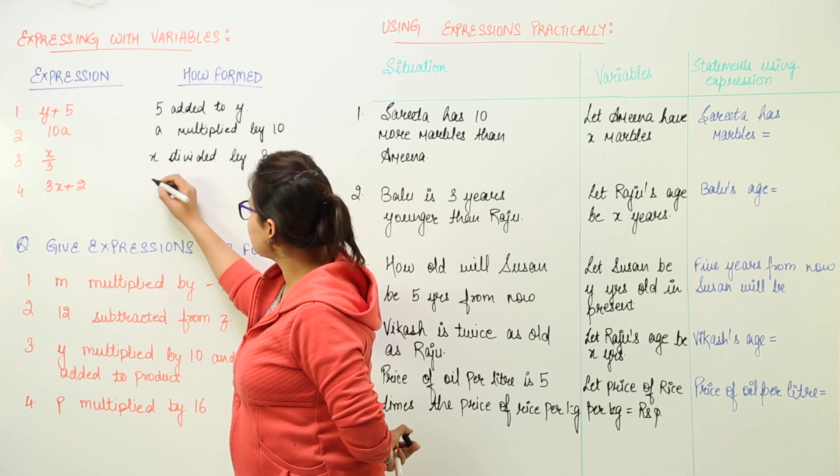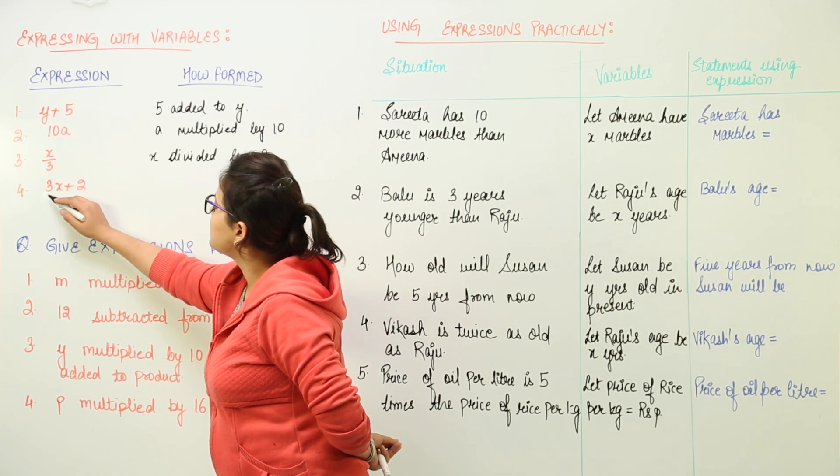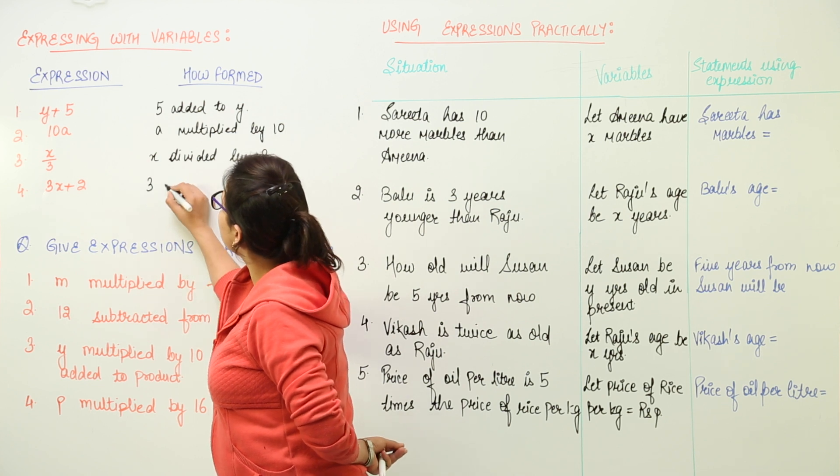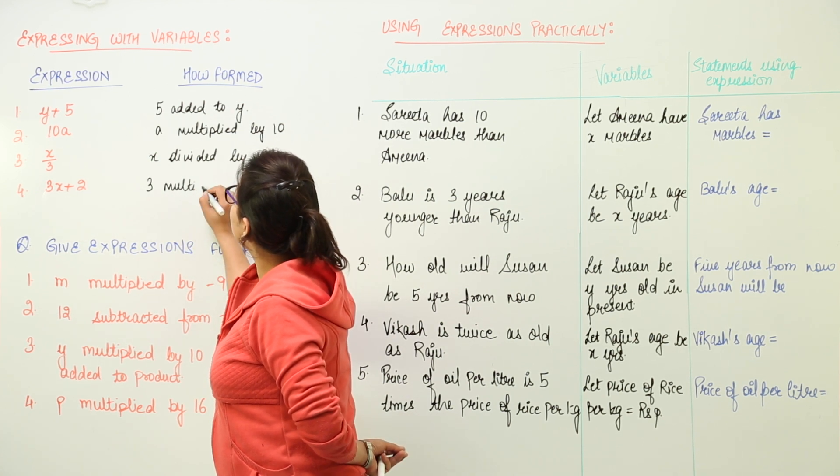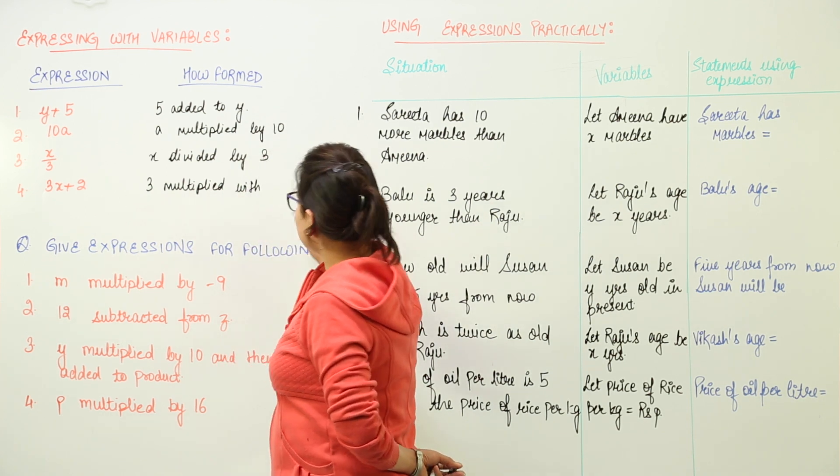So we write over here first of all the first step. The first step would be 3 multiplied with x and after that we will write and then continue with the next step.